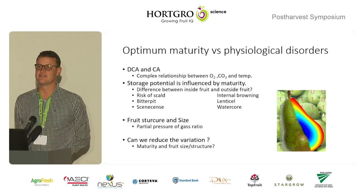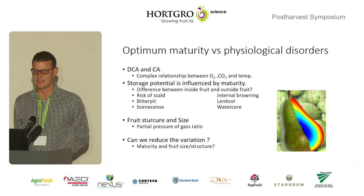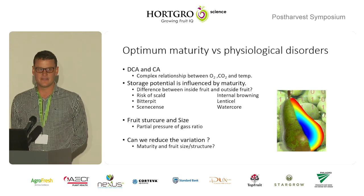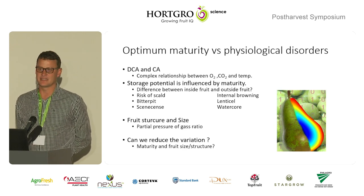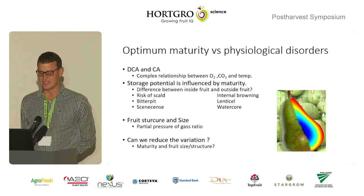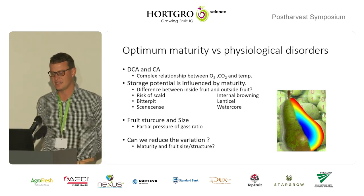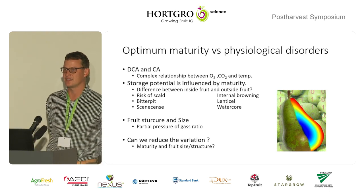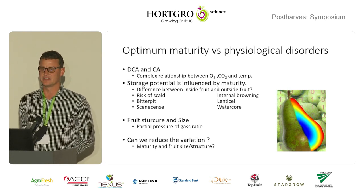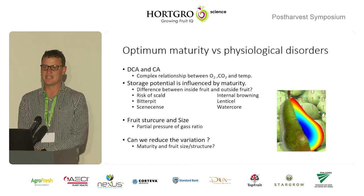So my observations over the past two or three seasons have come to some conclusions: if this is a very complex system, how can we make it a little bit less complicated by reducing the variation of what we put inside the rooms? To reduce that, we need to start looking at the orchards in which we produce the fruit, because this becomes a really complicated puzzle.